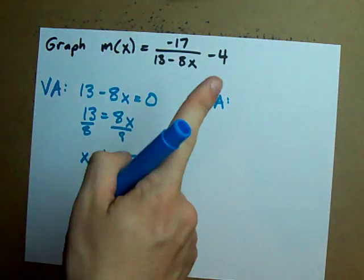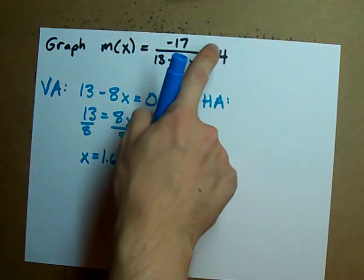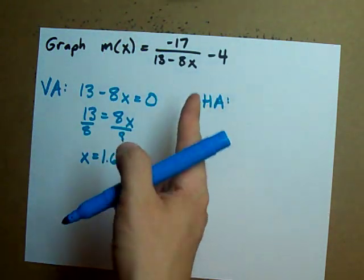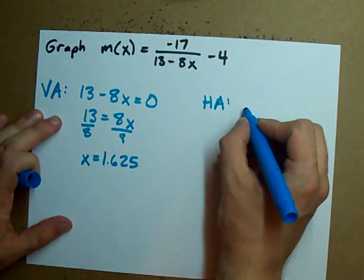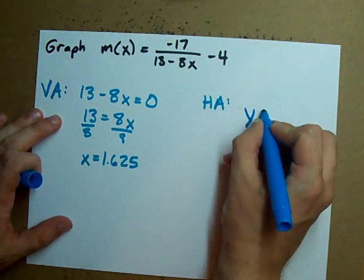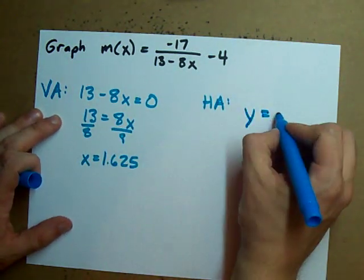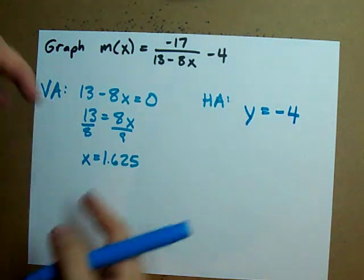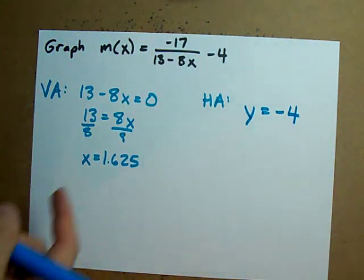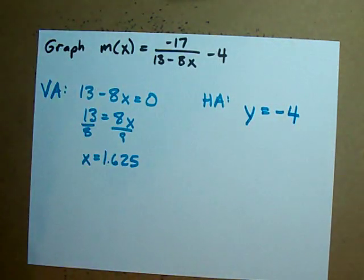Another way to put that: if there's a number added or subtracted at the end, that's your horizontal asymptote. Your horizontal asymptote here is y equals negative 4. You can just accept it that way if you want.